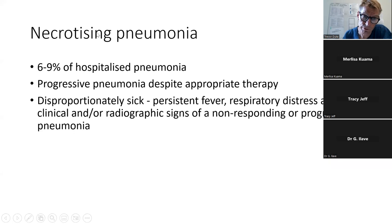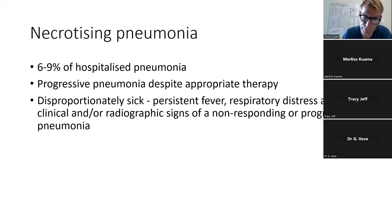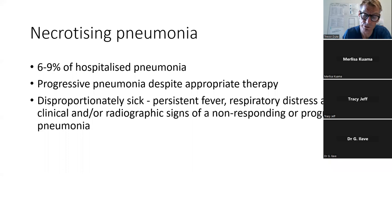This type of complicated pneumonia has been called necrotizing pneumonia. Whether you call it complicated or necrotizing, these children get progressive pneumonia despite what seems to be appropriate therapy — oxygen and antibiotics. They are generally disproportionately sick compared to other children with pneumonia. They have persistent high fever, worse respiratory distress, and chest X-ray findings suggesting abscess, empyema, or effusion.